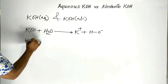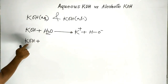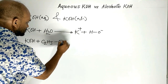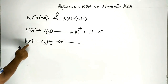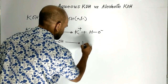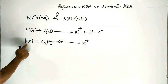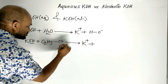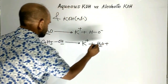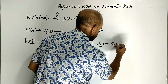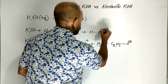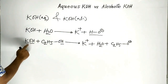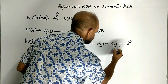Alcoholic solution of potassium hydroxide means potassium hydroxide is dissolved in alcohol — normally alcohol means ethanol. When potassium hydroxide is dissolved in ethanol, potassium hydroxide turns into potassium ion first, then hydroxide ion and hydrogen form water, and the remaining part is the ethoxide ion. So, aqueous KOH forms hydroxide ion and alcoholic KOH forms ethoxide ion.